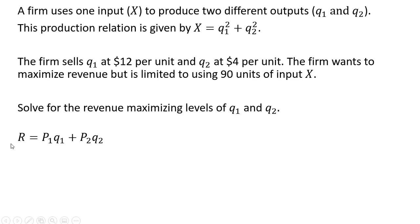We want to solve for the revenue maximizing levels of good 1 and good 2. Let's create the revenue function. So the revenue here is the price of good 1 times the output of good 1 plus the price of good 2 times the output of good 2. And now I'll substitute 12 and 4 in for those prices.